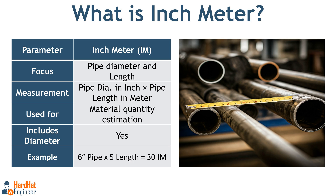Now let's talk about inch meter. This is different because it considers both the pipe diameter and its length. It's mainly used for calculating the material quantity. Let's take the same 6 inch pipe but now assume its length is 5 meters. Think of it as a way to calculate the material requirement for a piping project.